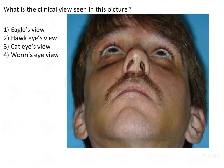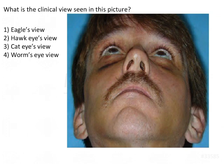Worm's eye view is the view basically seen from below. A worm crawls on the ground, so when it looks up, it sees everything from below towards the sky — that is why it is called the worm's eye view. For an eagle's view, everything is seen from top to bottom, placed at a higher level, whereas for a worm's eye view you are placed at a lower level.